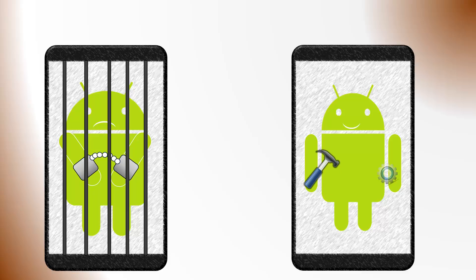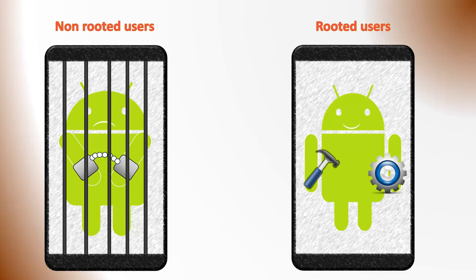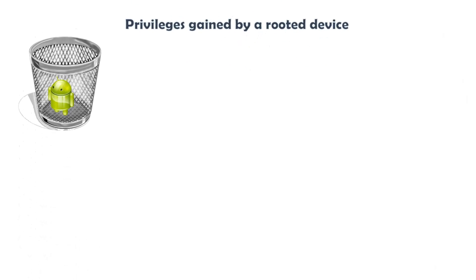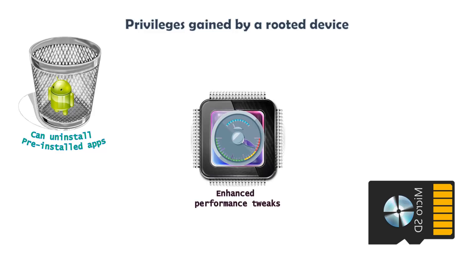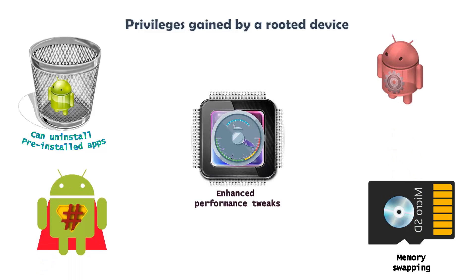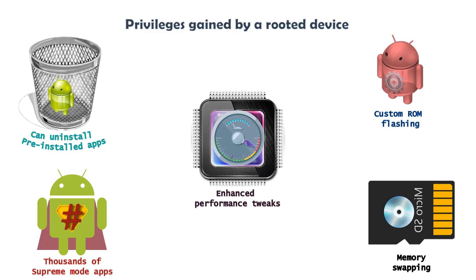What are the privileges gained by a rooted user or super user? A normal user can only do settings-allowed things, but a super user can utilize the complete open-source features of their Android device. A rooted user can do whatever they want with their device. For example, Samsung devices have several built-in system apps like S Play, S Games, S Browse, S Search, etc. Some users feel those are unnecessary files loaded into their device. A normal user cannot uninstall those system apps, but a super user can do it in just two clicks.